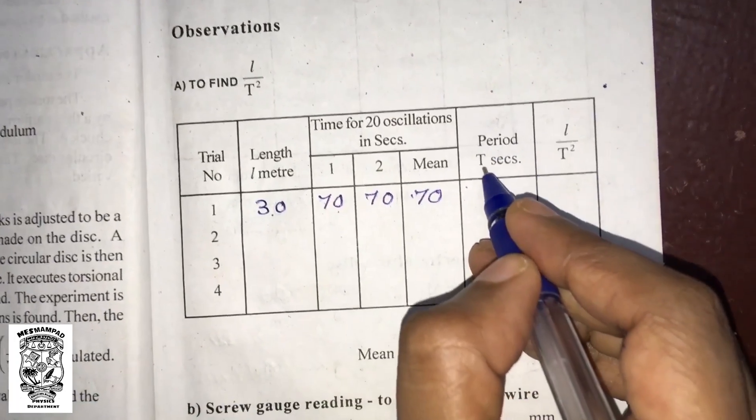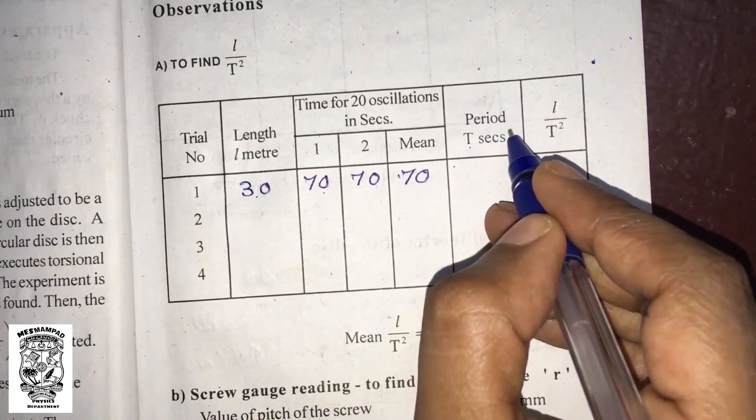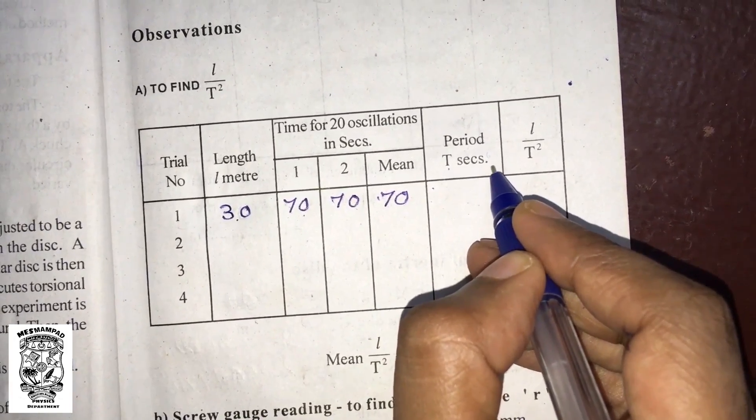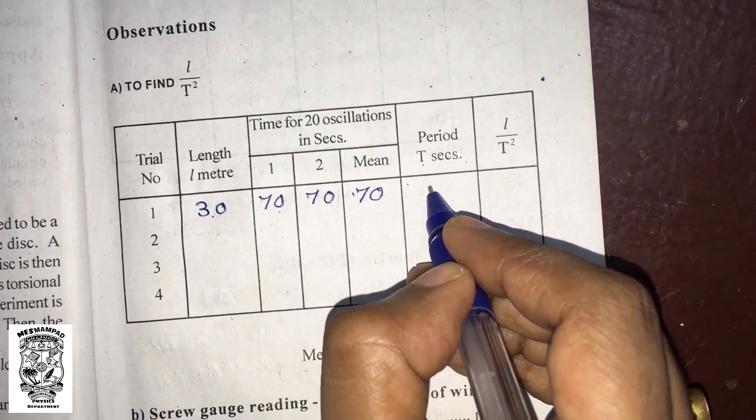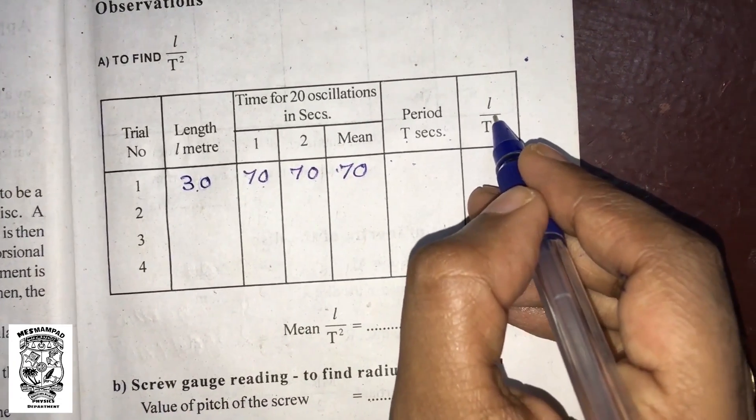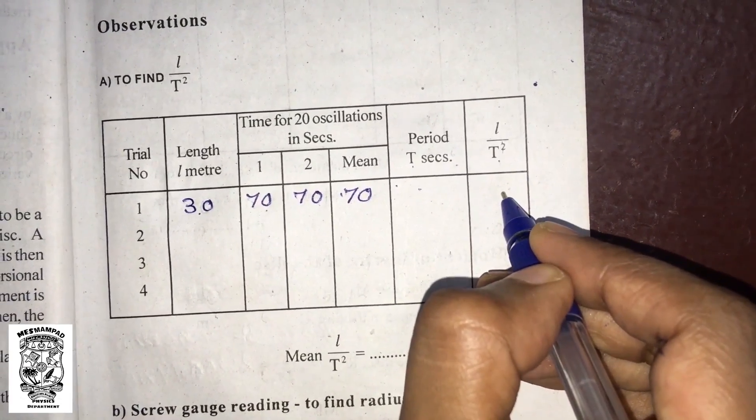Now, time period capital T equals small t divided by 20. We can calculate L by T squared.